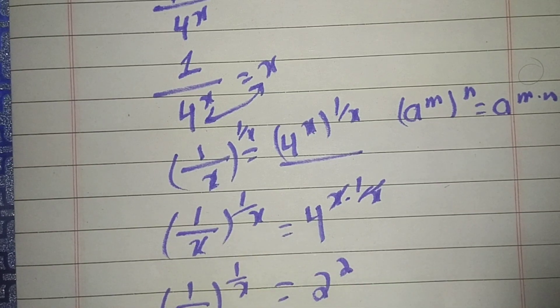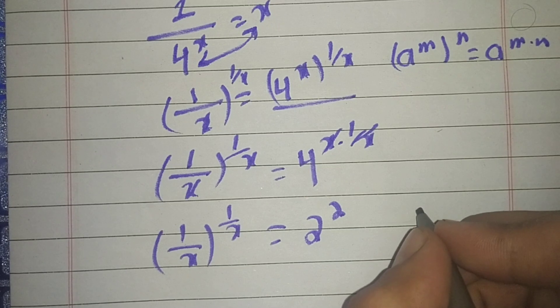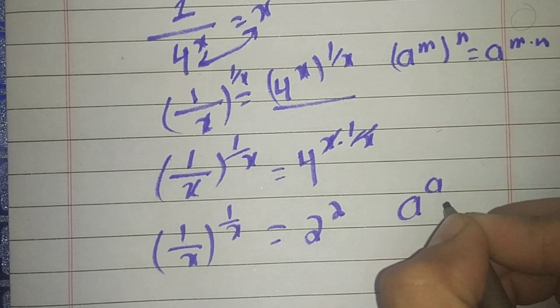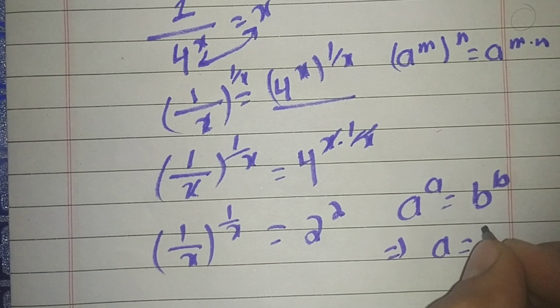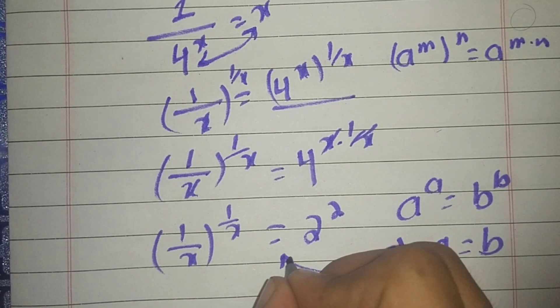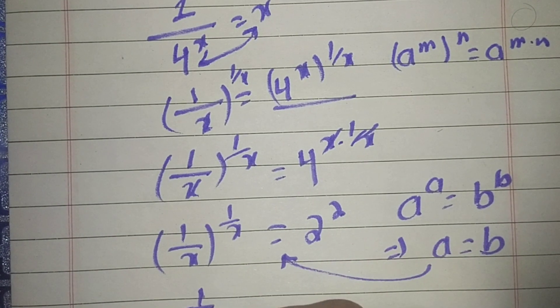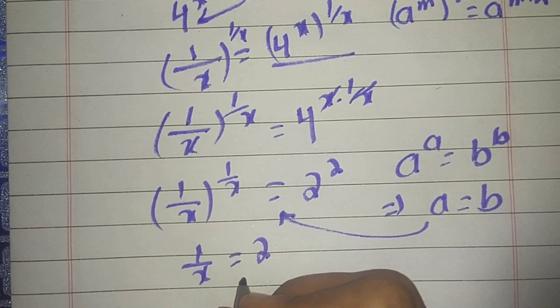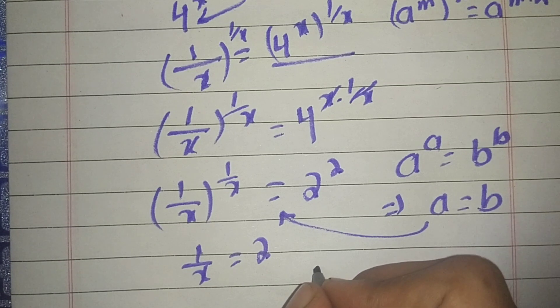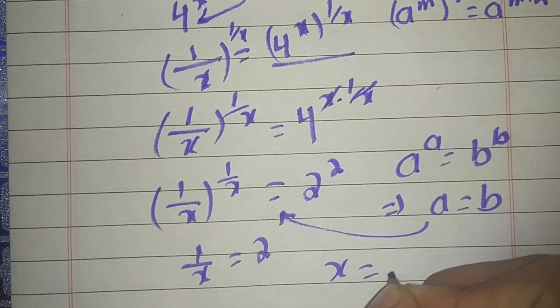From here, we have the property that a^a equals b^b implies that a equals b. We can apply this property here and we get 1/x equals 2. From here we have x equals 1/2.